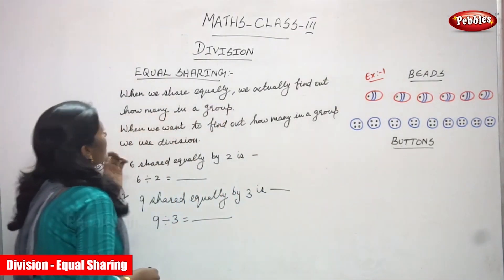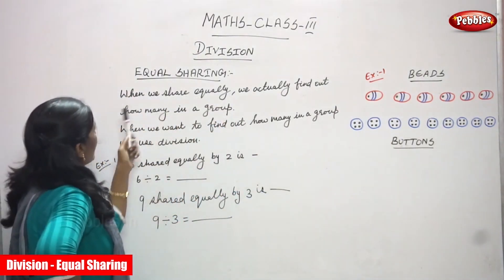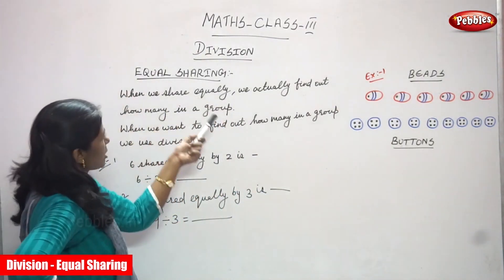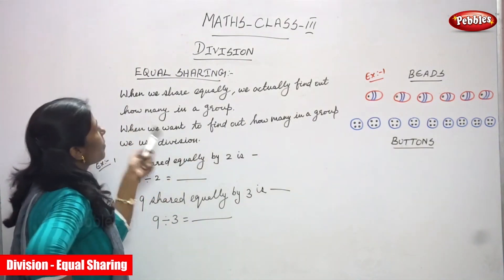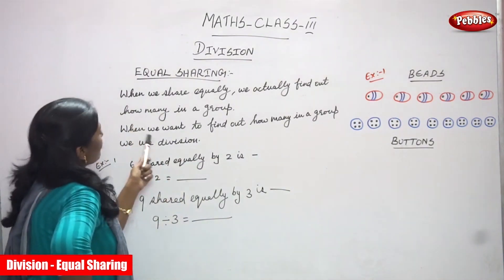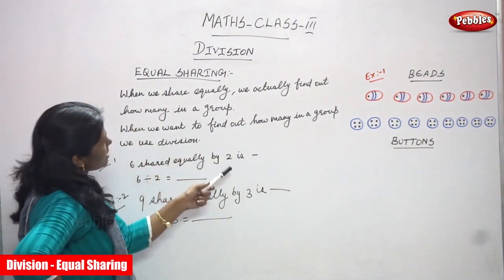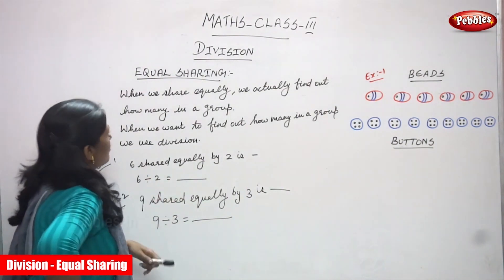Now we are going to see equal sharing as a heading. When we share equally, we actually find out how many in a group. When we want to find out how many in a group, we use division.